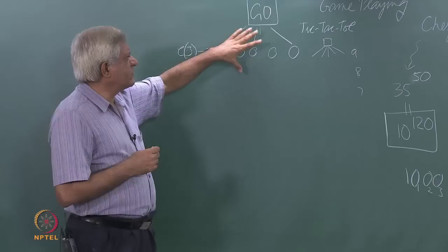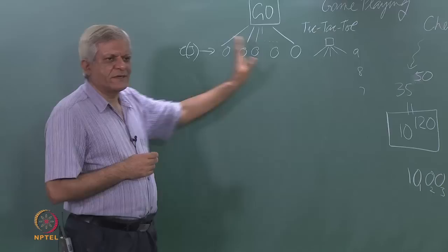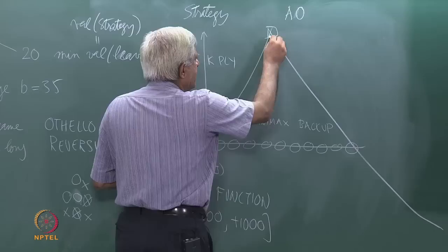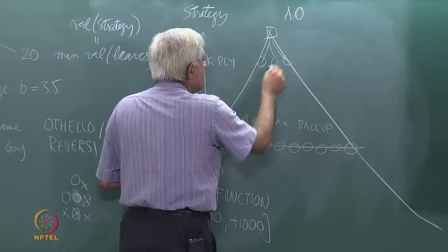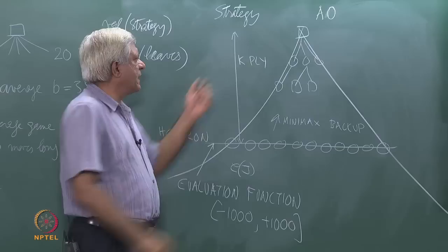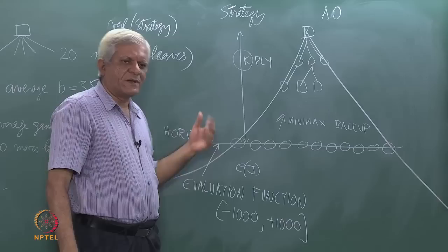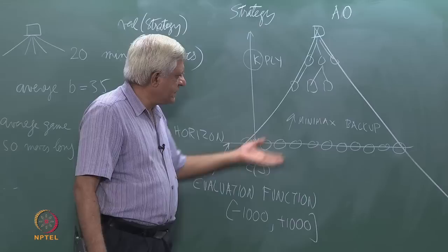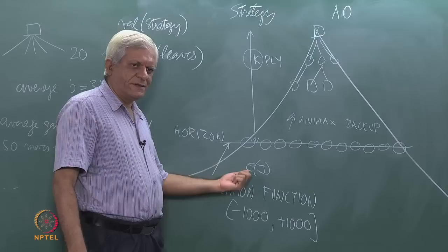If there is no lookahead, you are just looking at the choices you have and picking the best based on the evaluation function. With deeper search, you look at your choices first, then what the opponent can do in that position, and so on. You keep doing that to some k-ply depending on how much computing power you have. Go up to the k-th ply, apply the evaluation function there, and then back up the values.